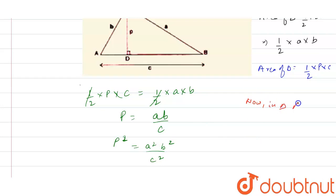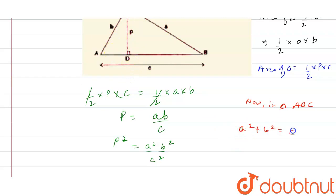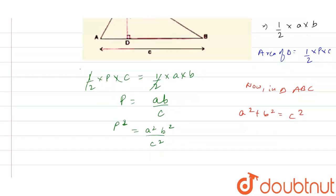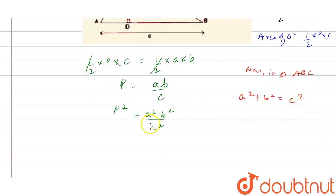Now in triangle ABC, according to the Pythagorean theorem, base squared plus perpendicular squared equals hypotenuse squared, so a² plus b² equals c². Now by substituting c² with this value, we get p² equals a²b² divided by (a² + b²).